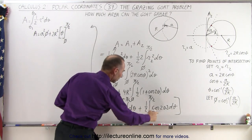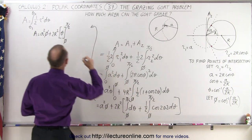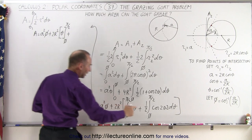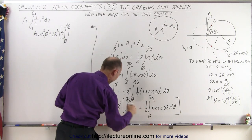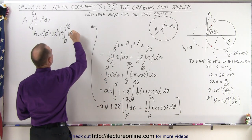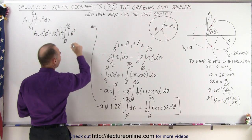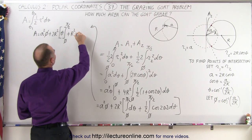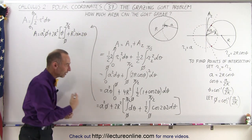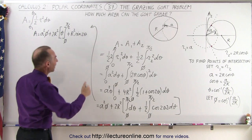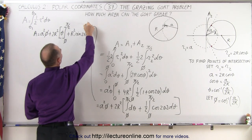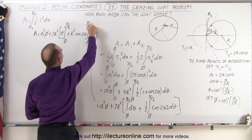And then integrating the cosine term, we get plus one-half times 2R squared — which is R squared — times the sine of 2θ, because the integral of cosine is sine, with limits from φ to π/2.